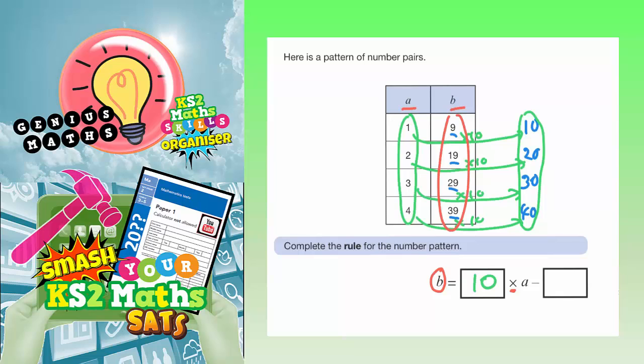So 10 take away 1 is 9, 20 take away 1 is 19, 30 take away 1 is 29, 40 take away 1 is 39. So it looks like we're then taking away 1.